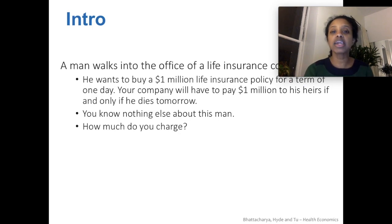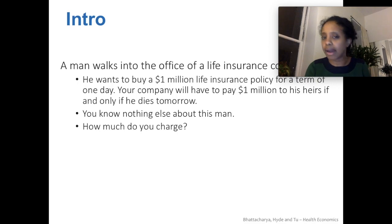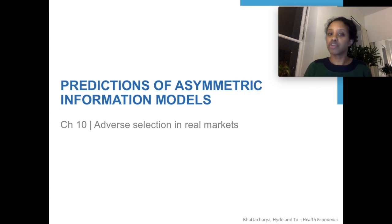You might be thinking to yourself, maybe this person has some kind of information. Why do you want to buy an insurance policy for the next 24 hours? Are you about to die? So that would be an example of where asymmetric information is likely to exist and could be a real problem.